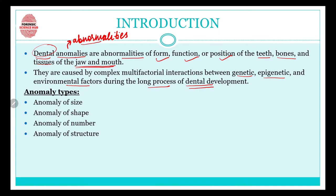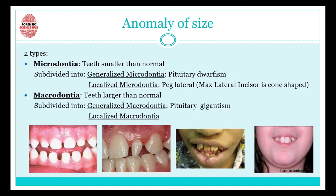These anomalies are formed during the long process of dental development, when our teeth are getting formed. Anomalies can be based on four types: anomaly of size, anomaly of shape, anomaly of number, and anomaly of structure. In this video I'm going to discuss anomaly of size and anomaly of shape.